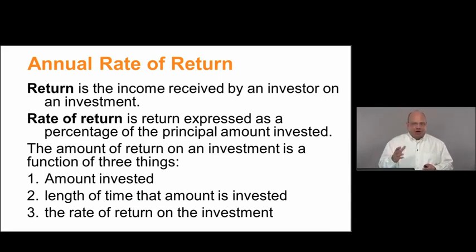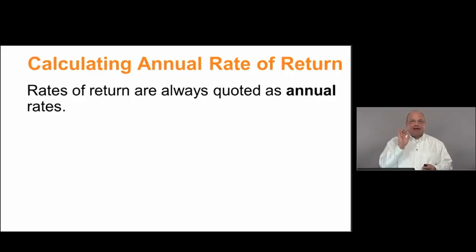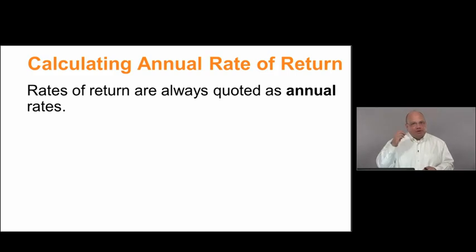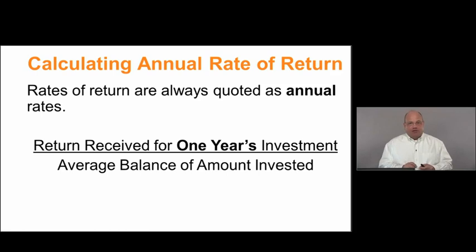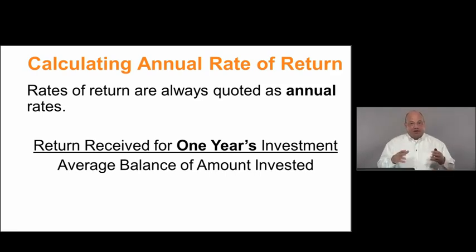When we're talking about a rate of return, we're talking about a percentage, and we quote that rate of return as an annual rate. An annual rate means what percentage of the amount invested would be earned if the investment were held for one full year. The formula for the annual rate of return is the return received on one year's investment divided by the average balance of the amount invested — what was the average amount invested over the time period the investment was outstanding.